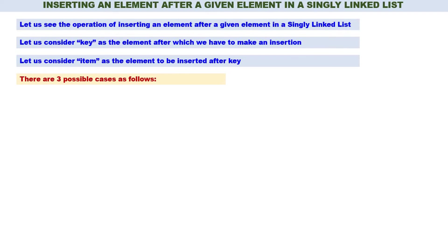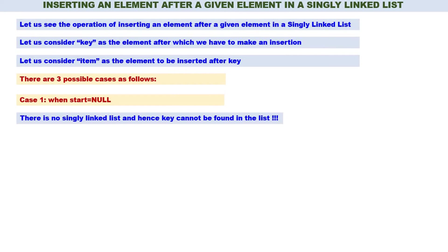There are three possible cases. Case one: when start is equal to null, meaning there is no linked list. When there is no linked list, there is no possibility of finding key in the linked list, therefore no insertion is possible.